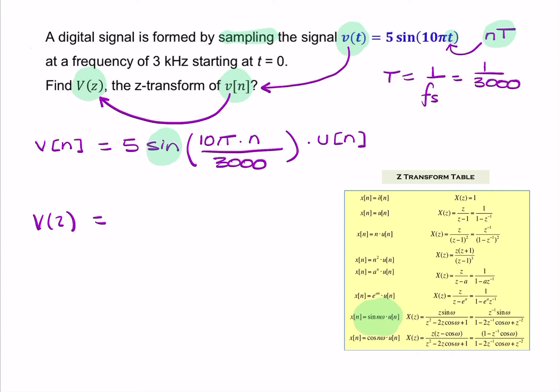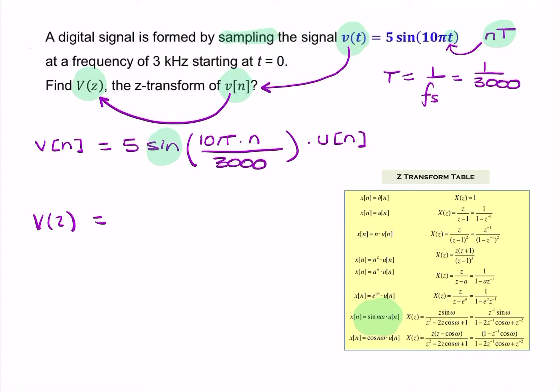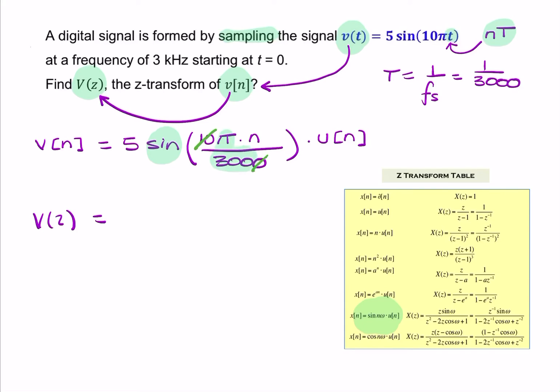So, comparing the two, it looks like we have sine n omega, where omega, if we cancel the 10 and the 0, the omega would be this π over 300. So, that's my frequency.